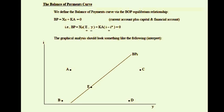Points to the right of the BP equilibrium line represent deficits in the overall balance of payments. Higher income leads to more imports ceteris paribus, worsening the trade balance and the balance of payments. Alternatively, lower domestic interest rates cause a net outflow in the capital account, worsening the overall balance of payments. So points C and D reflect the balance of payments being in deficit.